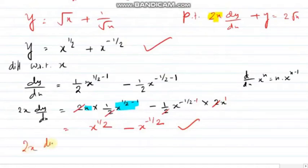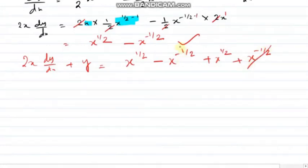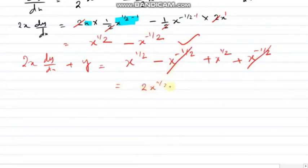Adding the two lines: 2x dy/dx + y = (x^(1/2) minus x^(−1/2)) + (x^(1/2) plus x^(−1/2)). The x^(−1/2) terms cancel, and it becomes 2x^(1/2), which is 2√x. That is what we had to prove.